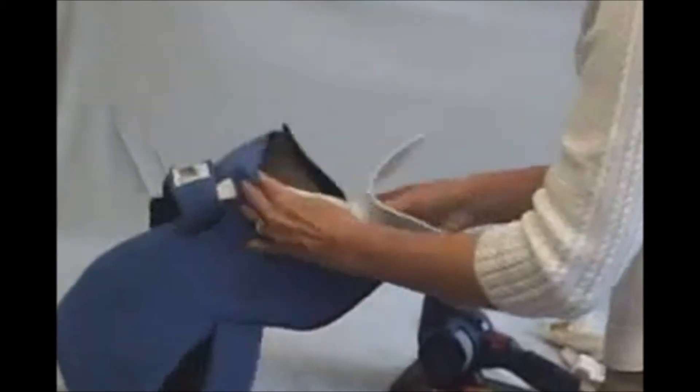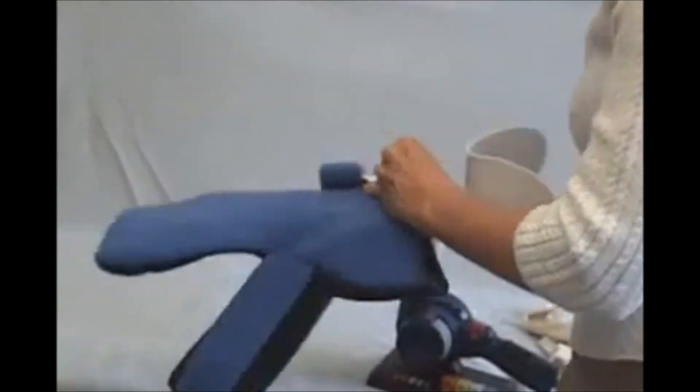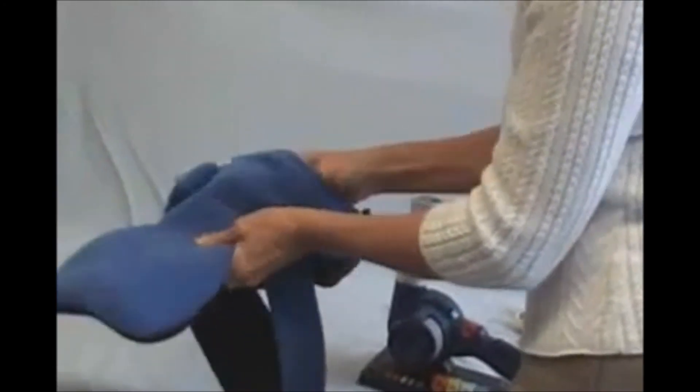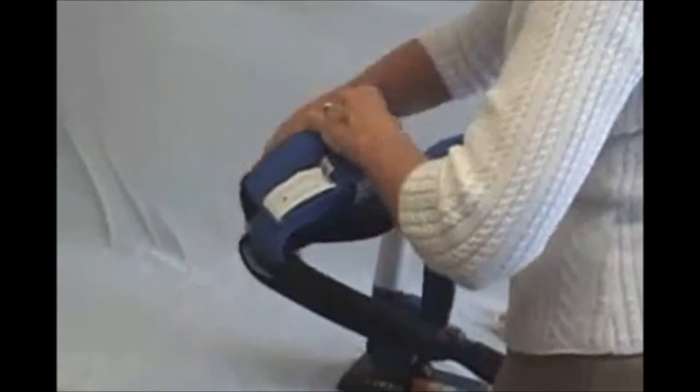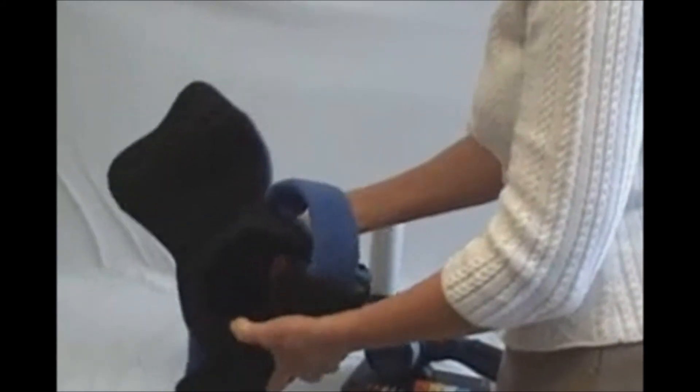I'm going to reinsert it with the curved side toward the patient. The black material is toward the patient. Insert it all the way in. The blue material covers the outside, the black just velcros over, and you're ready to refit your patient.